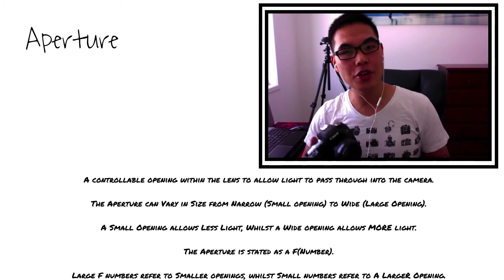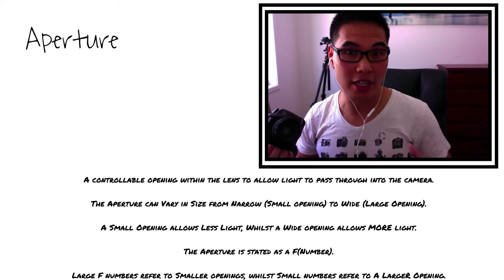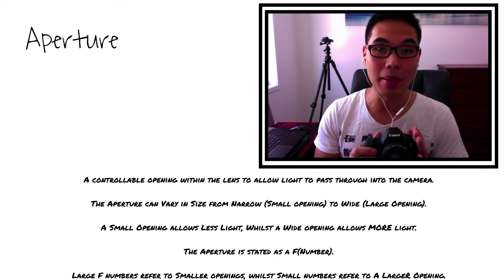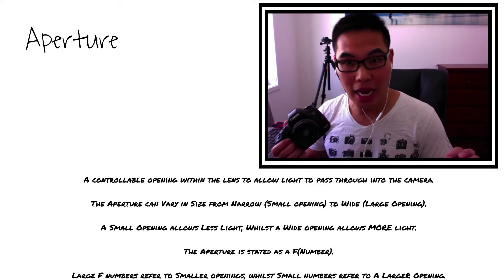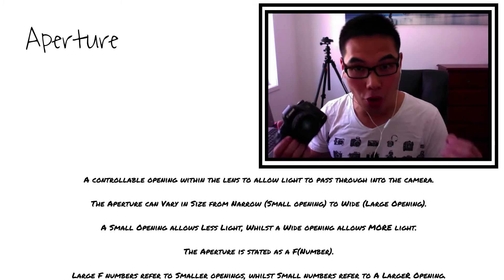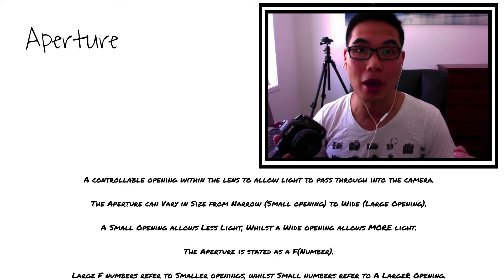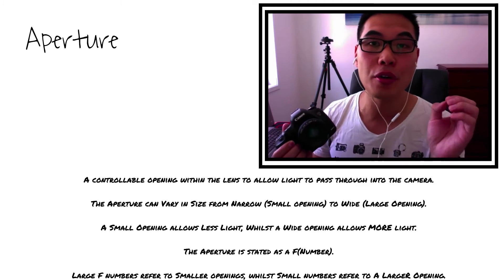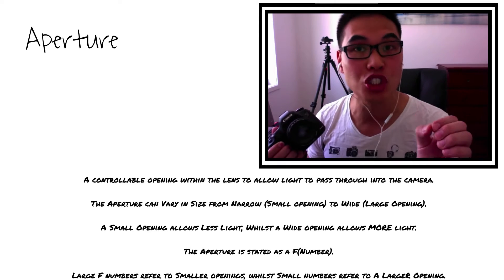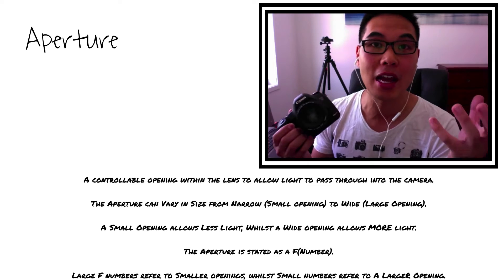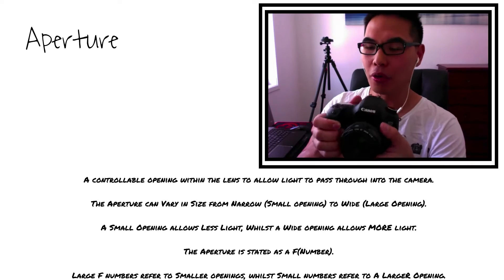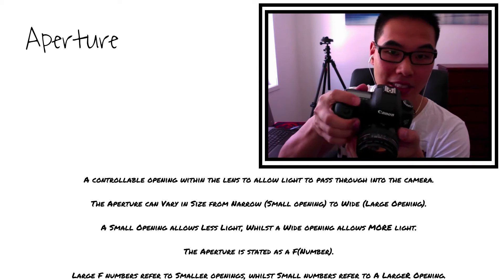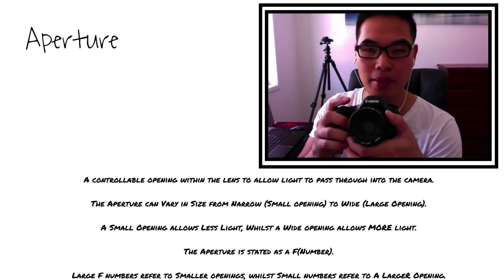I'm now going to show you how I adjust and vary the size of the aperture on my camera. Each camera has its own unique way of adjusting the aperture — you need to look through your instruction manual to find out how. For the Canon system that I use, it's basically just turning this quick dial up on top.